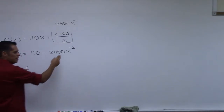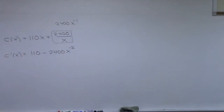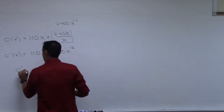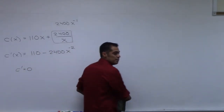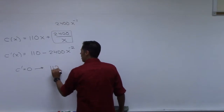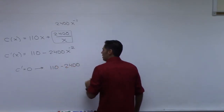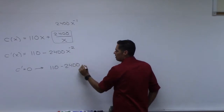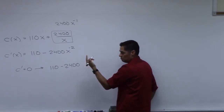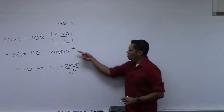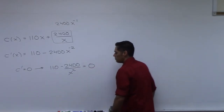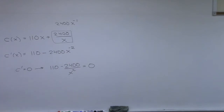Then you have to set that equal to zero. I thought this might throw people off with the negative two power. So let's set C prime equal to zero. Setting it to zero means 110 minus 2400 over x squared equals zero. I'm going to write this as 2400 over x squared rather than x to the negative two — it's the same thing.